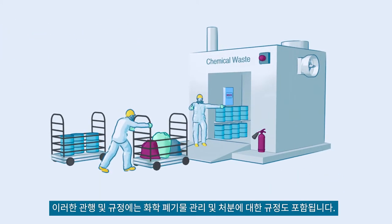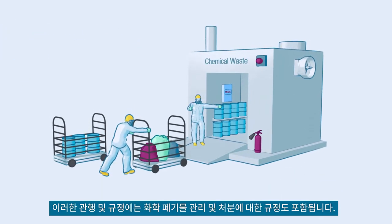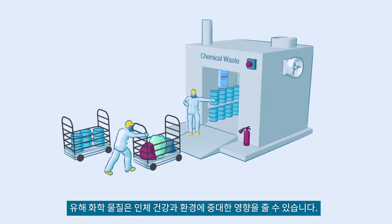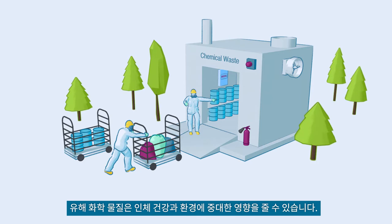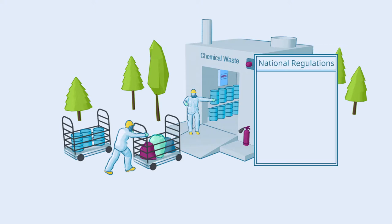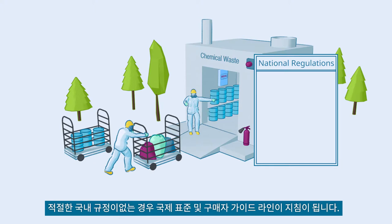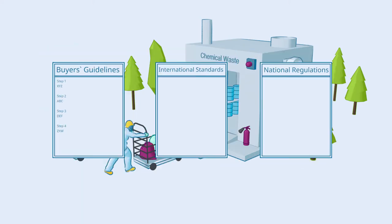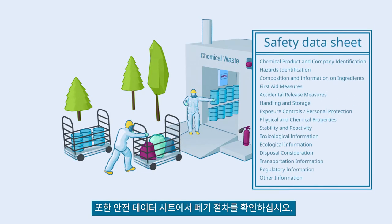Chemicals management also involves planning and making emergency provisions such as spillage and leak control facilities, fire protection and response measures, and a drainage system connected to the effluent treatment plant. Such practices and provisions also include those for the management and disposal of chemical waste. Hazardous chemicals can have a significant impact on human health and the environment. Therefore, chemical waste needs to be disposed of according to national regulations. In the absence of adequate national regulations, international standards and buyer's guidelines can provide guidance. Also, check the disposal procedures from the safety data sheets.